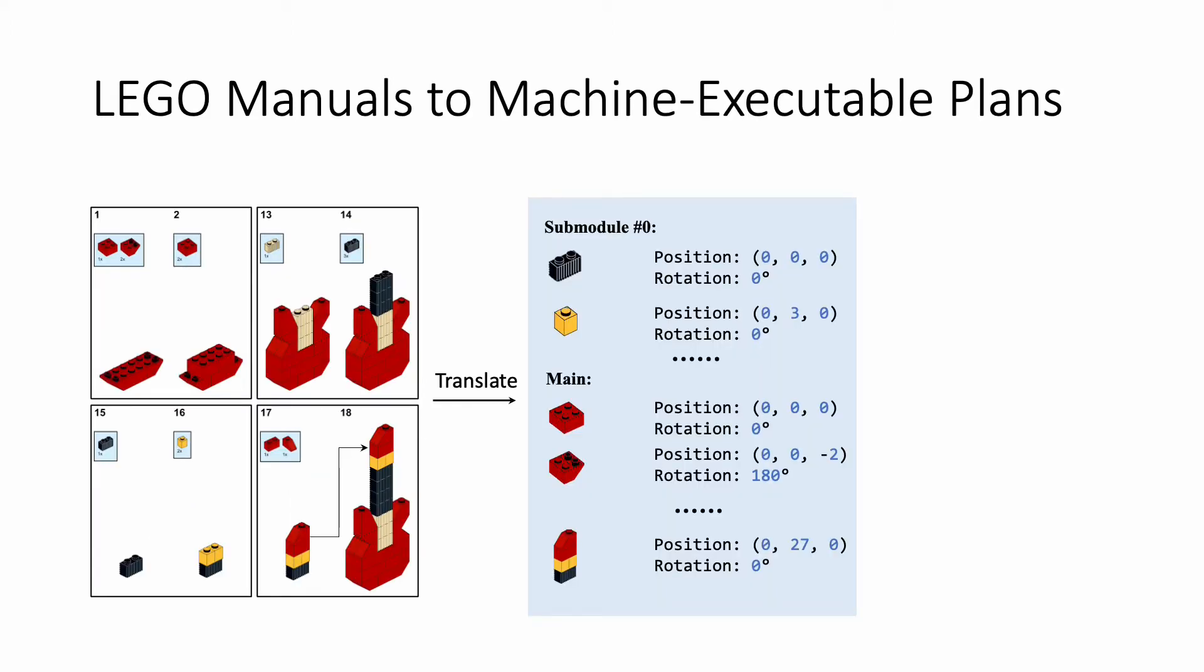So given the manual, our goal is to translate it into a series of machine executable instructions, represented by a series of 3D poses for each component. Once we have this executable plan, we can leverage it to build the corresponding 3D LEGO object by sequentially moving the components into desired locations.